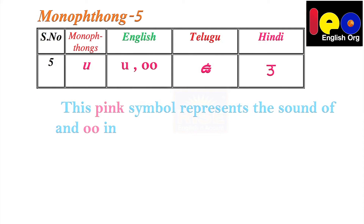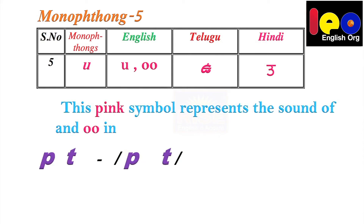Monophthong 5. This pink symbol represents the sound of U in 'put' and the sound of O in 'cook.'